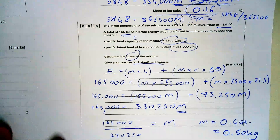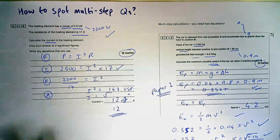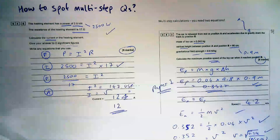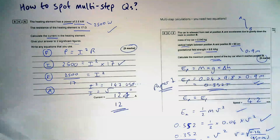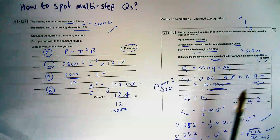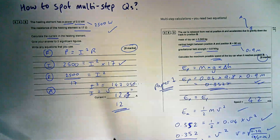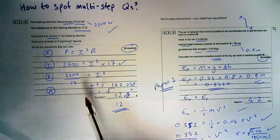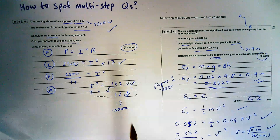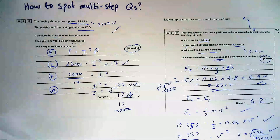Don't be afraid of multi-step equations — they are going to get you five or six marks on each of your physics papers. If you practice them enough and know how to do them, they should be a reliable source of marks in your exam.